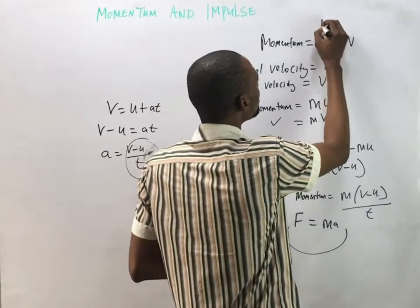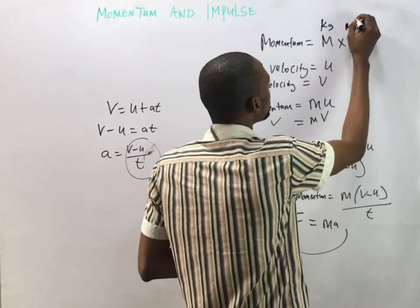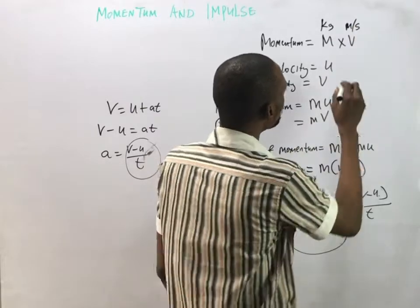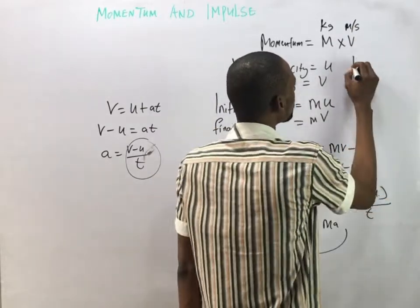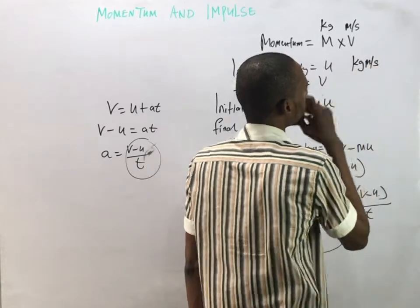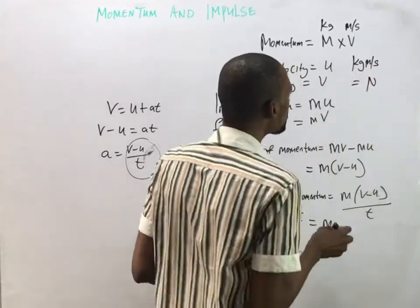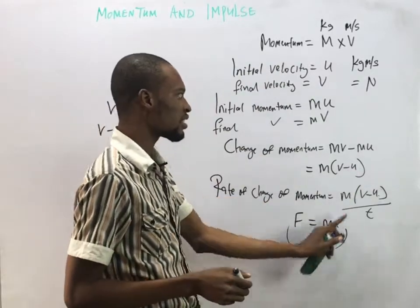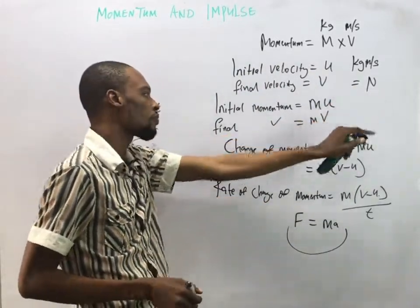Since momentum equals mass times velocity, mass is in kilograms and velocity is in meters per second. The unit of momentum is kilogram meters per second, which is the same as newton-seconds, so momentum has the unit of newtons.